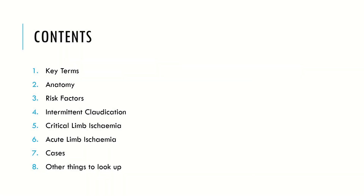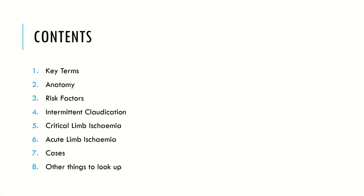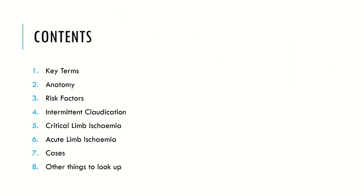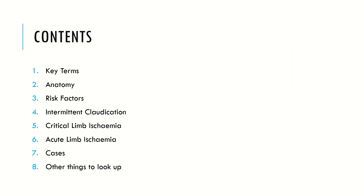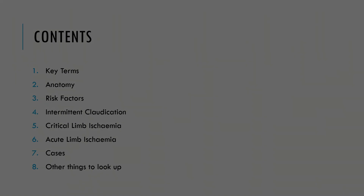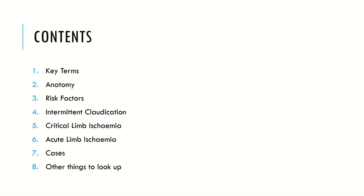Today we're going to cover the key terminology, anatomy, risk factors, and then get on to the meat of the topic which is intermittent claudication, critical limb ischemia, and acute limb ischemia. We'll then recap at the end with some cases and look at which other things you can do to complete your vascular revision.